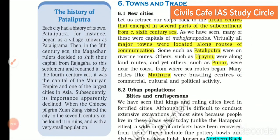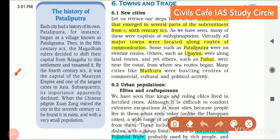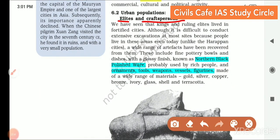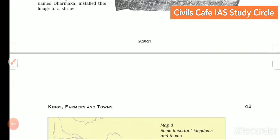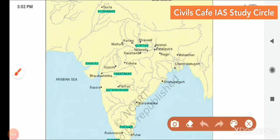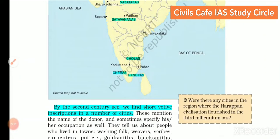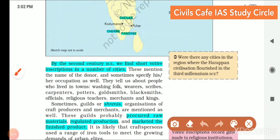The major towns were Pataliputra, Ujjain, Puhar, Madurai, etc. The urban population included elites and craftspeople, and important artifacts included northern black polished ware. Kingdoms in this era included Kushanas in the Taxila region, Guptas, Shakas, Vakatakas, Satavahanas and Cholas in the south. You need to remember the locations of different dynasties, and the order Chola, Chera and Pandya.